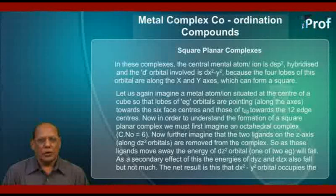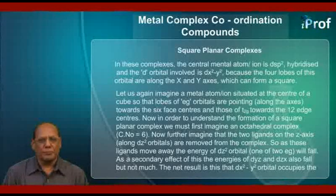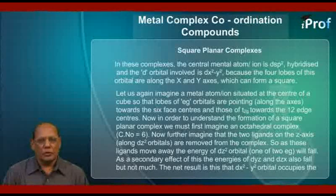Now, in order to understand the formation of a square planar complex, we must first imagine an octahedral complex with coordination number equal to six. Further imagine that the two ligands on the z-axis, that is along the dz² orbital, are removed from the complex.